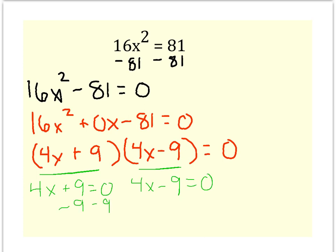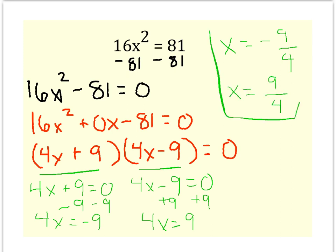So to solve both of these, 4x equals negative 9. When you divide both sides by 4, you'll get x equals a negative 9 over 4. When I add 9, 4x equals 9, and I divide both sides by 4, I get x equals a positive 9 over 4. So these would be both of my answers.